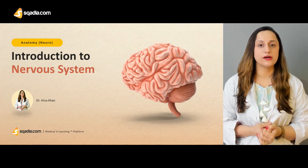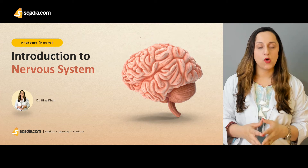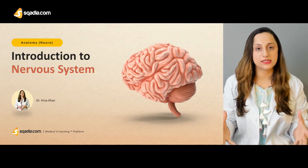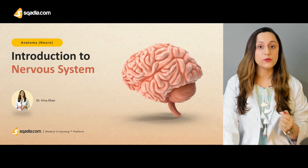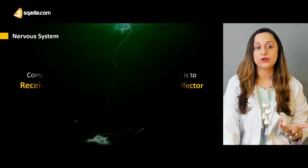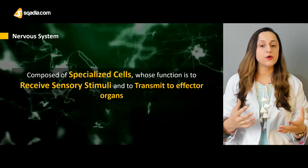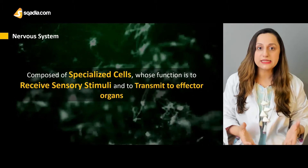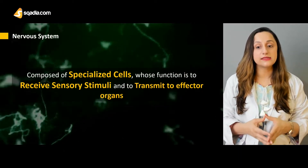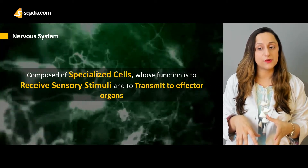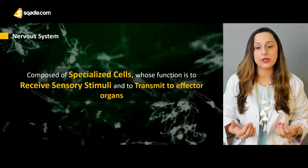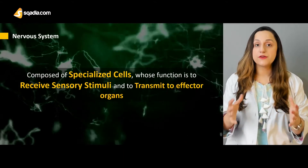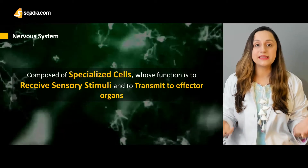Today we're going to give you a comprehensive overview of our nervous system. Our system is divided into different parts only for theoretical basis. When we define the nervous system, it is basically composed of specialized cells. The basic function of these specialized cells is to receive sensory stimuli and to transmit messages to the effector organs for the coordination and integration of those effector organs.